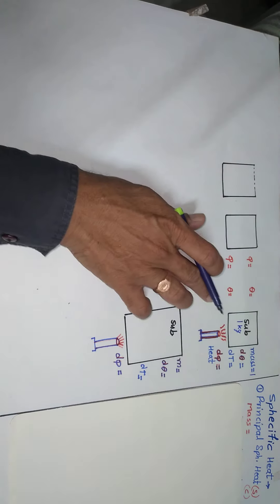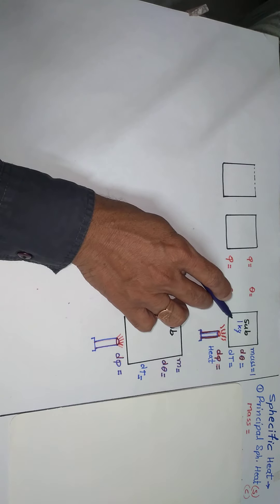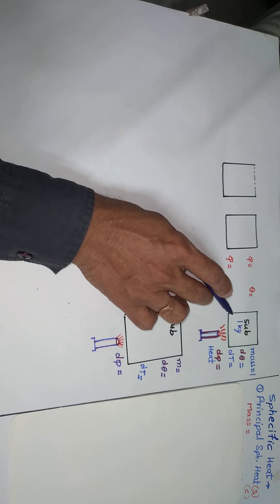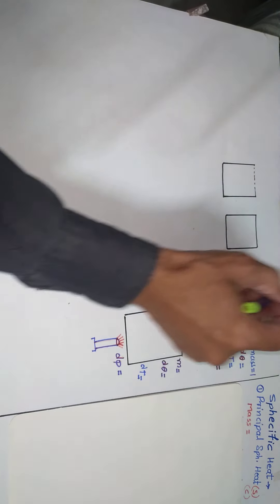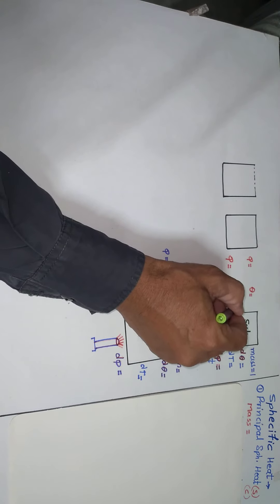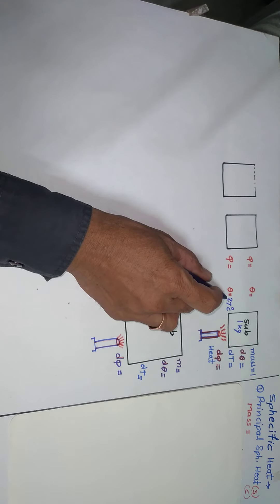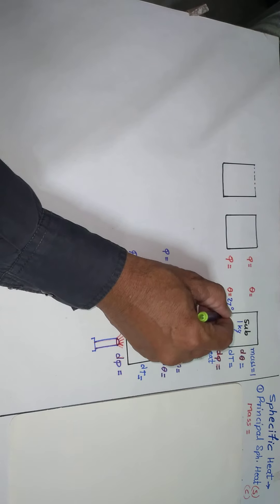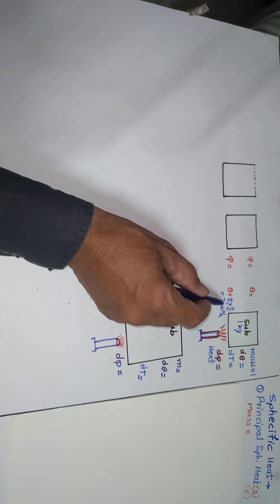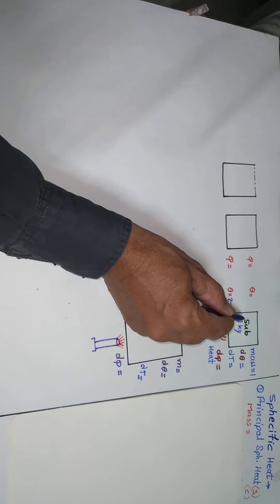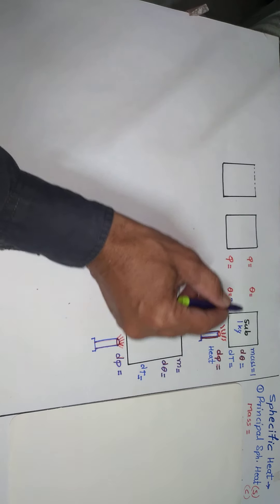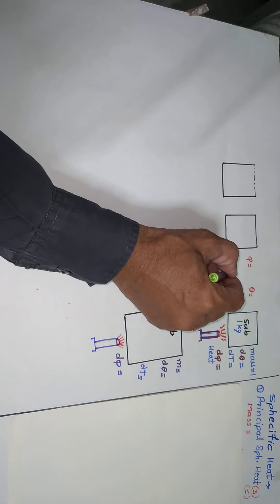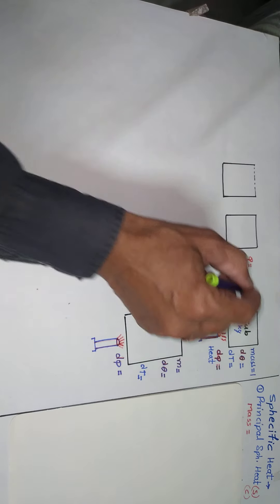Now measure its temperature — whether it is 10°C, 20°C, 30°C, or some other value. Let's say its temperature is 27°C. You can convert this to Kelvin by adding 273, so it becomes 300 K. Because of this temperature, the substance already possesses certain heat — for example, 10 kilocalories.